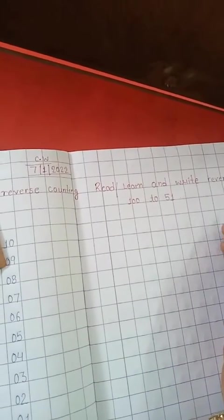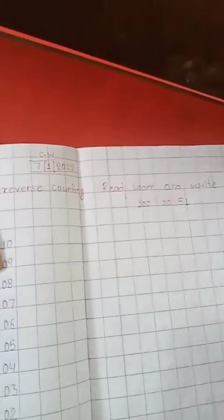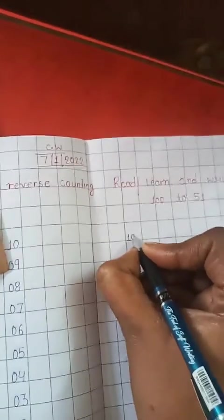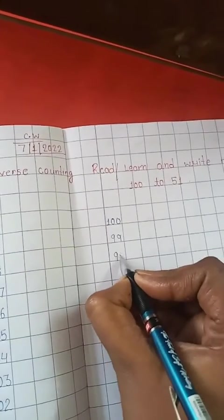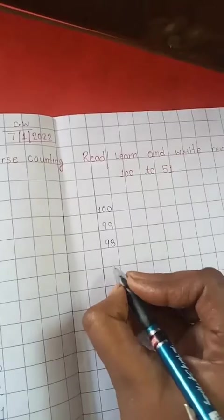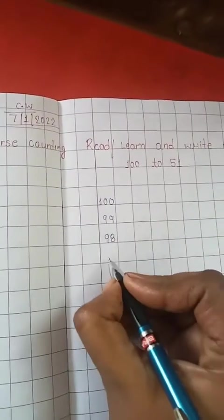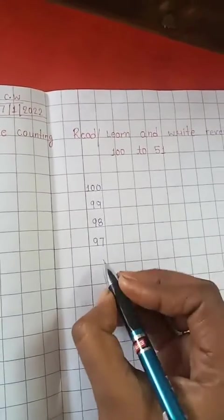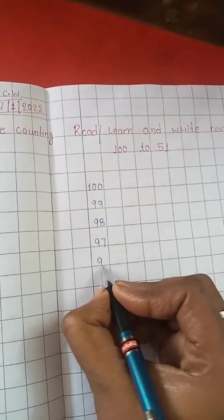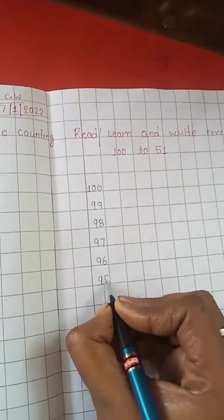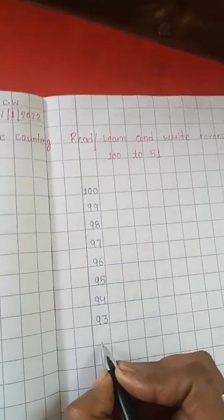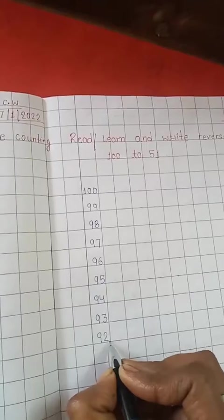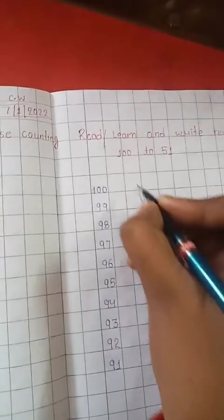Ok student, so now we write reverse counting. So write 100, 99, 98, 97, 96, 95, 94, 93, 92, 91, 90.